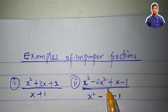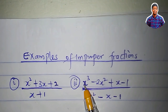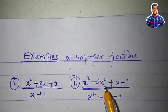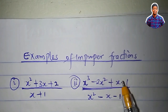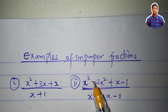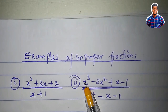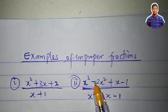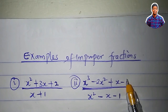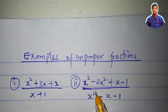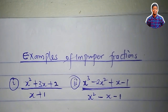The same thing here. The degree here is 3 because 3 is the highest power of x. I have x squared, x to the power of 1, but 3 is the highest power of x. So the degree of this numerator is 3. The degree of this denominator is 2. Since 3 is greater than 2, this is an improper fraction.